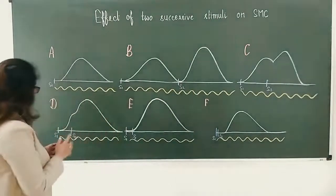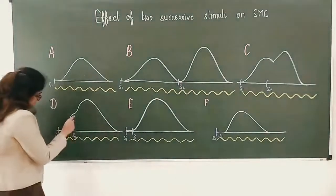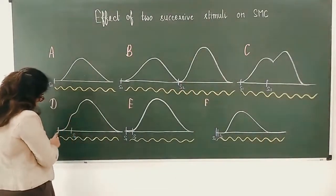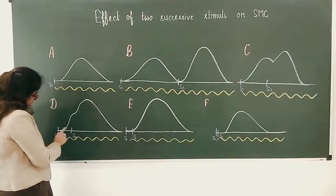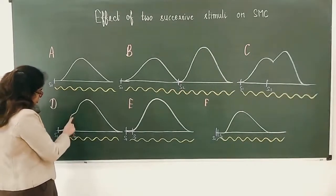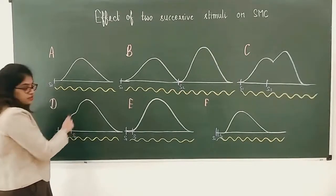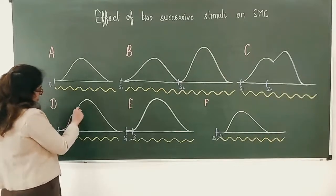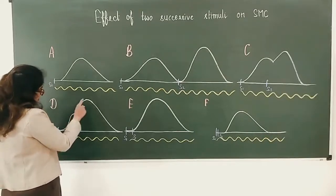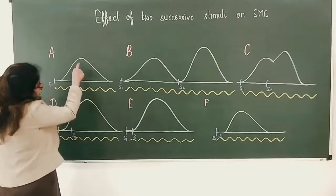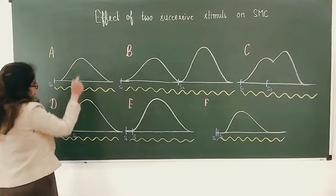Here two stimuli are being given. The second stimulus falls on the contraction phase of the first. So here we can see a kink in the contraction phase, and again the height of the curve is more than the basic curve.